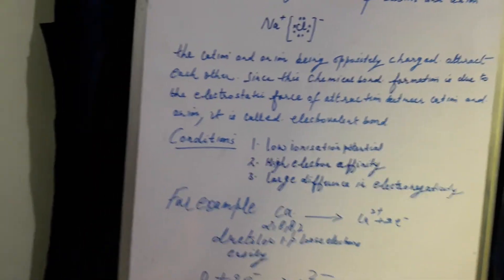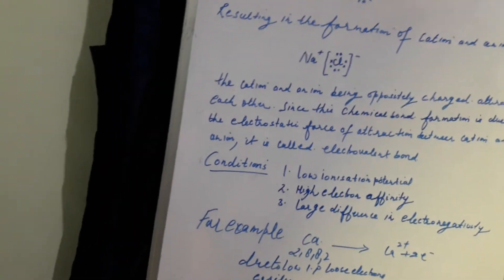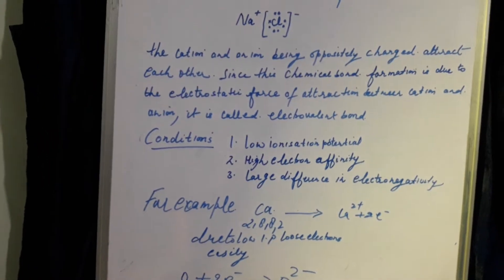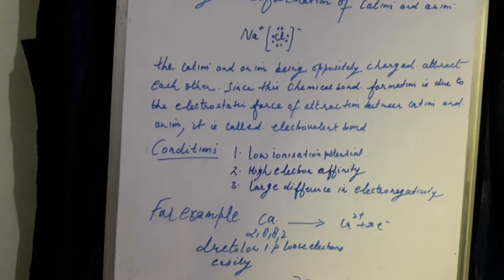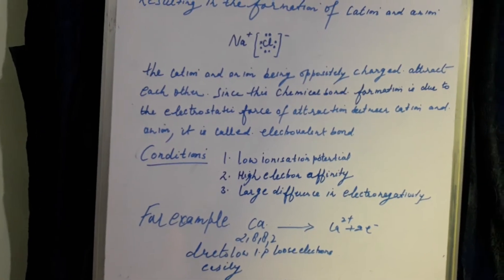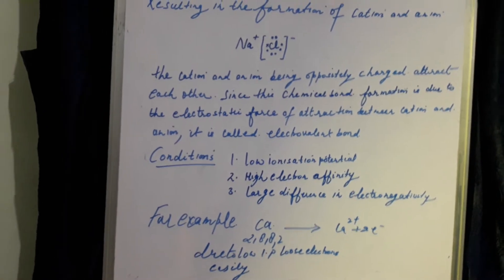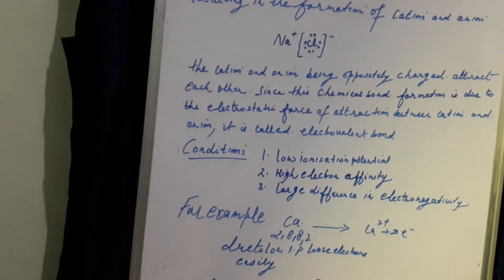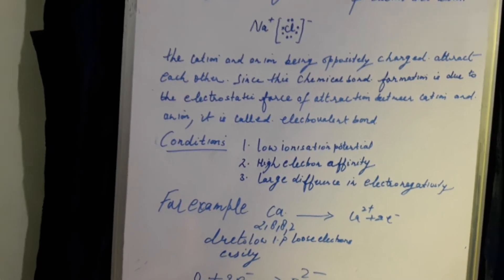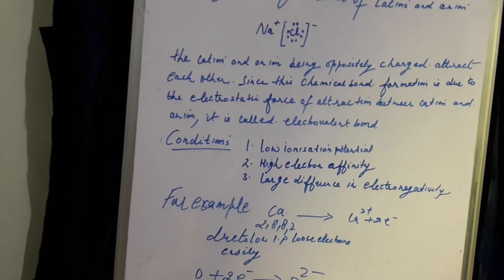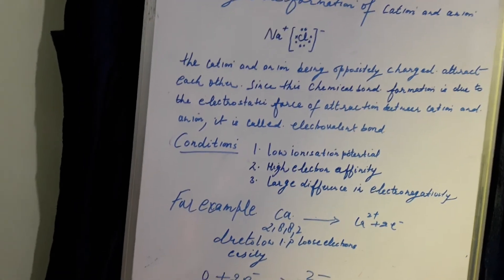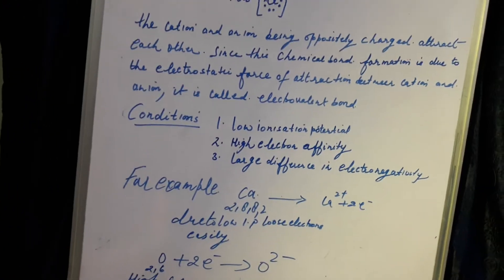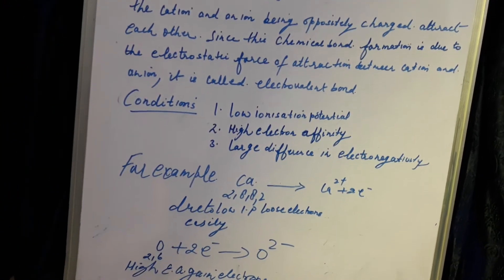Why low ionization potential? So that the atom can easily lose an electron to form a cation. Why high electron affinity? So that the non-metal can easily gain an electron to form an anion.